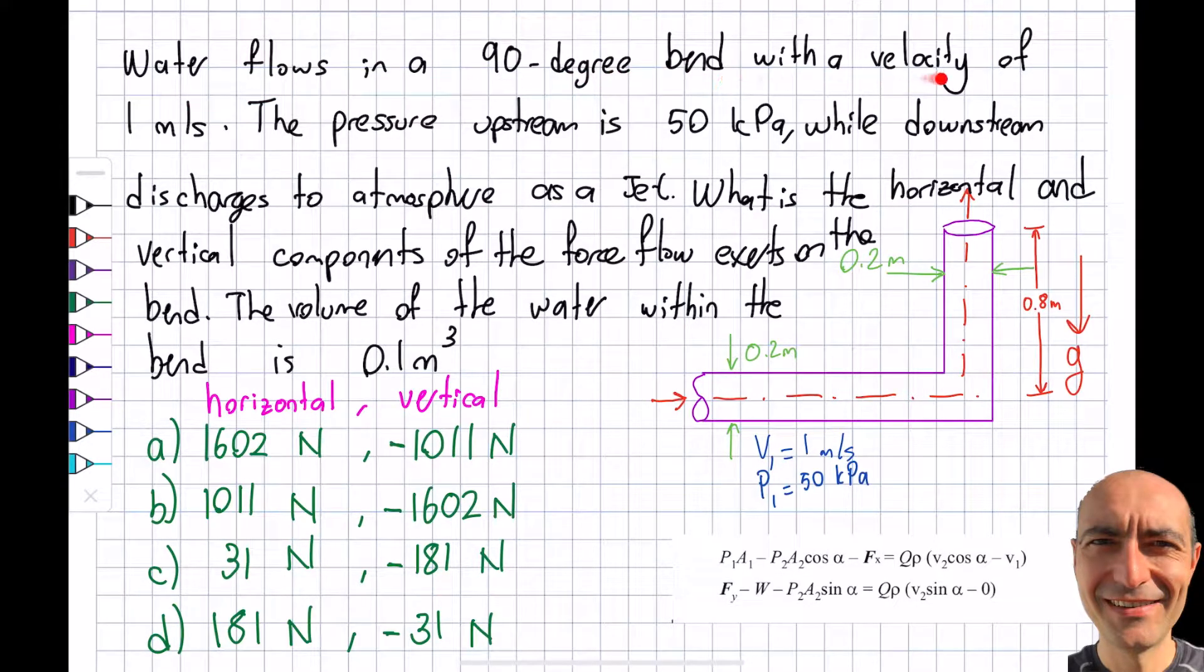Water flows in a 90 degree bend with a velocity of 1 meter per second. The velocity is constant and obviously the area is constant too from the conservation of mass. The pressure upstream is 50 kPa and the downstream discharges to atmosphere as a jet. So if I am using gauge terminology, the pressure over here will be equal to 0. The question is asking what is the horizontal and vertical components of the force flow exerts on the bend, and I give you the volume of the water within the bend.